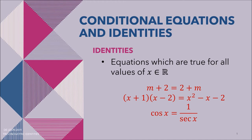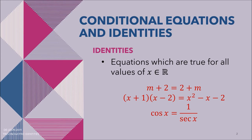Now let's try replacing the variables with any value. If we replace m by 1, we get 1 plus 2 equals 2 plus 1, simplifying to 3 equals 3. If we replace m by 4, we get 4 plus 2 equals 2 plus 4, giving 6 equals 6. So replacing the variable with any number, we always arrive at a true statement. This means identities have infinitely many solutions, while conditional equations have a limited number of solutions.